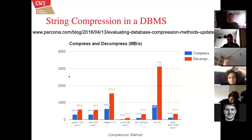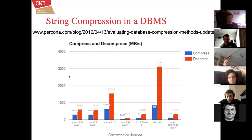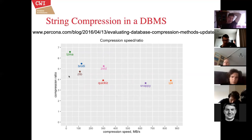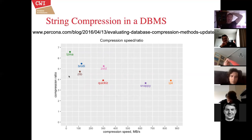Decompression speed is the most important metric for analytical workloads, since that's what the scan operator typically does. Snappy is at least twice as slow as LZ4 in decompression, and ZSTD is four to six times as slow. ZSTD is a bit better in compression ratio. If speed is your most important criterion, LZ4 is the best choice. If you're only interested in compressed size, LZ4 is not your best choice.